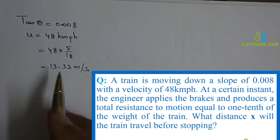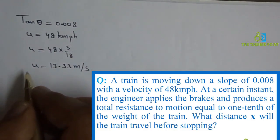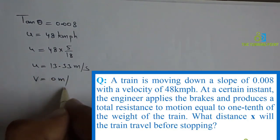This is initial velocity in terms of m per second. At a certain instant, the engineer applies the brakes. When he applies the brakes, what will be the final velocity? It will come to rest, so the final velocity is 0 m/s.